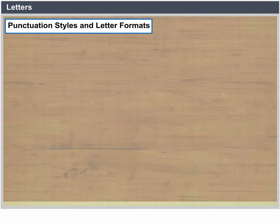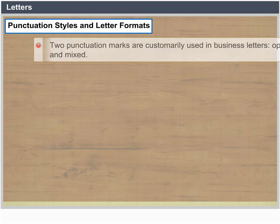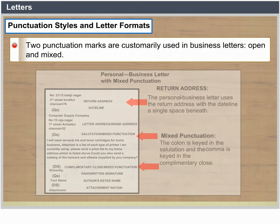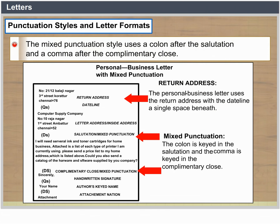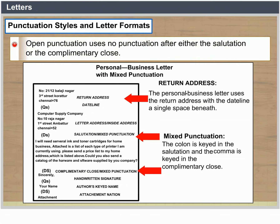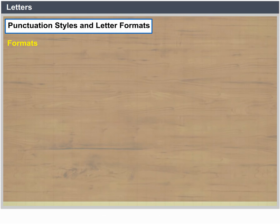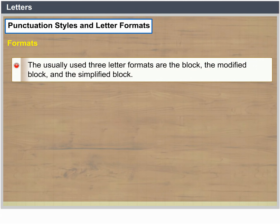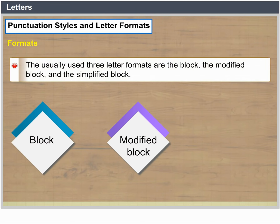Punctuation Styles and Letter Formats. Two punctuation marks are customarily used in business letters: open and mixed. The mixed punctuation style uses a colon after the salutation and a comma after the complementary close. Open punctuation uses no punctuation after either the salutation or the complementary close. The three letter formats that are usually used are the block, the modified block and the simplified block.